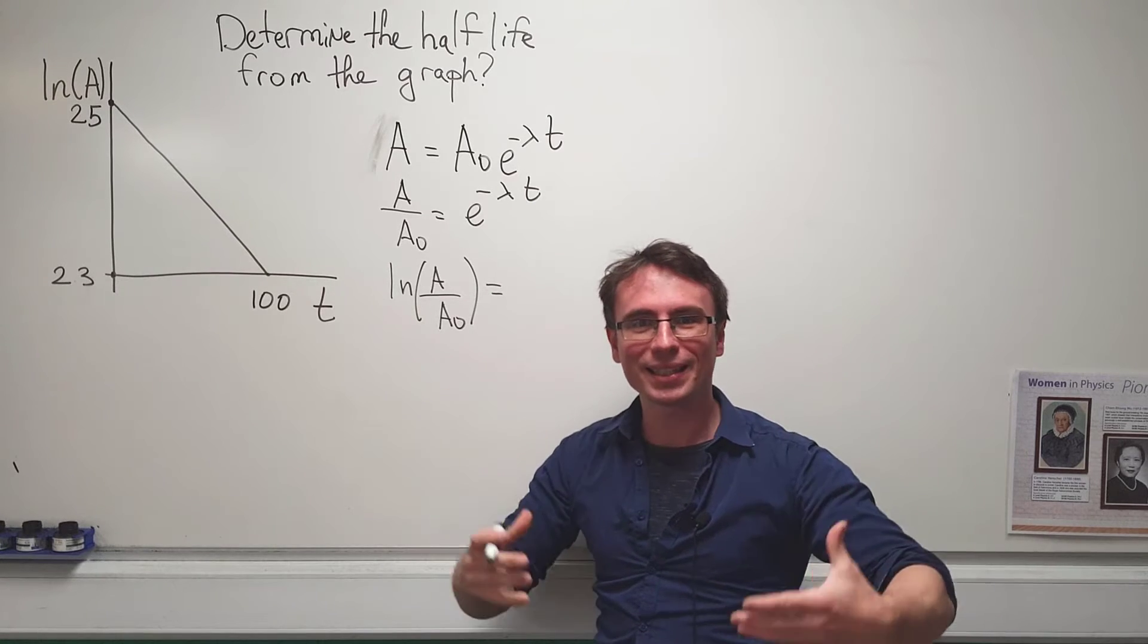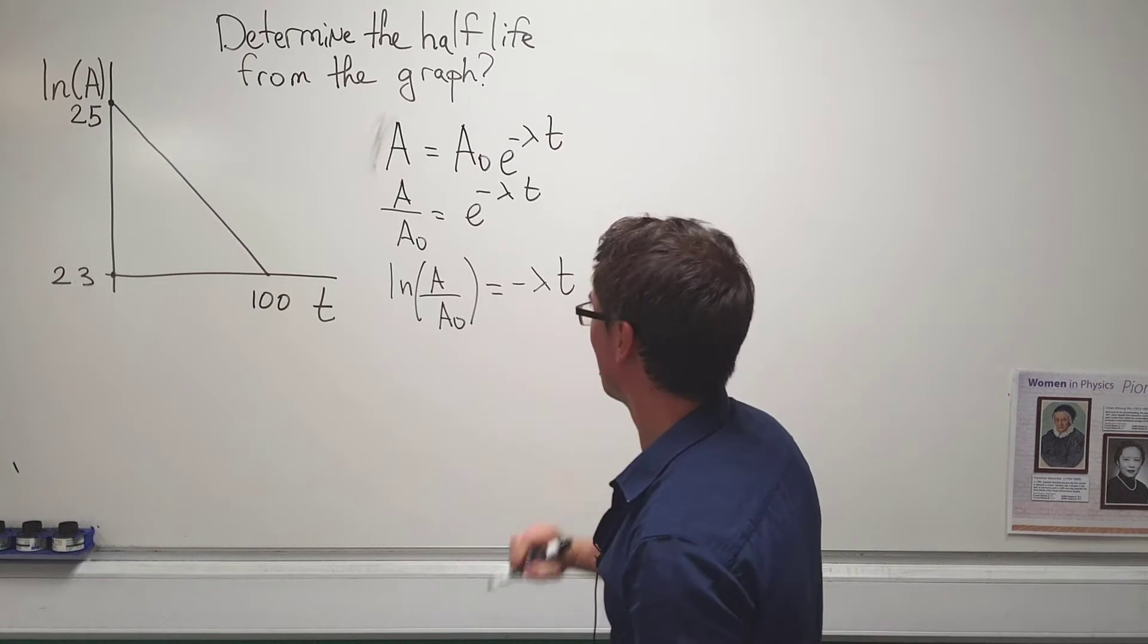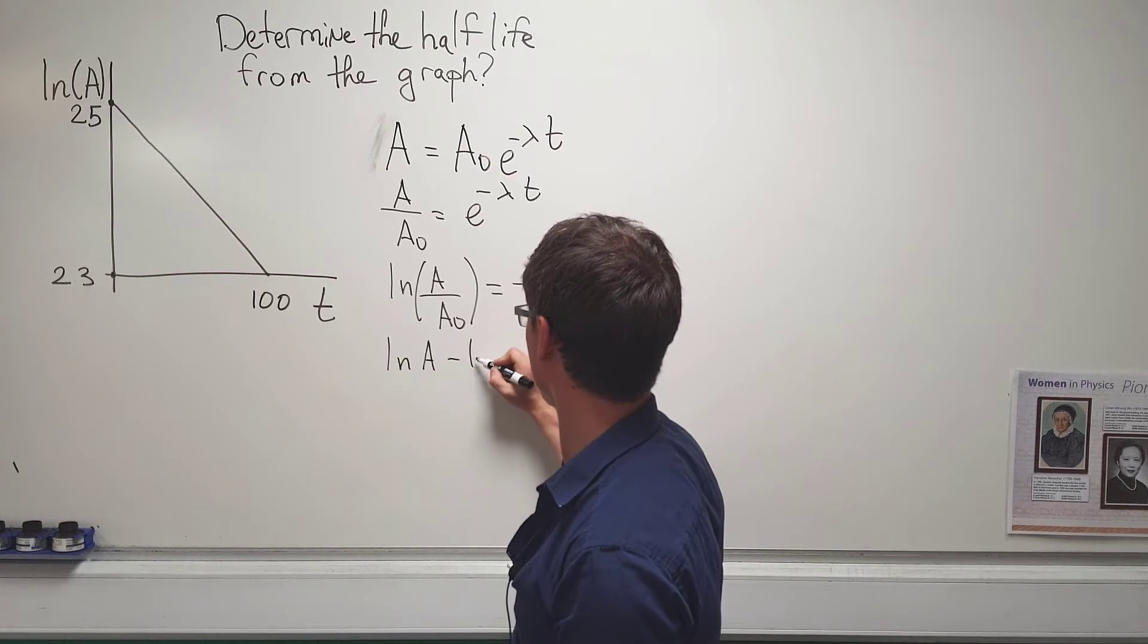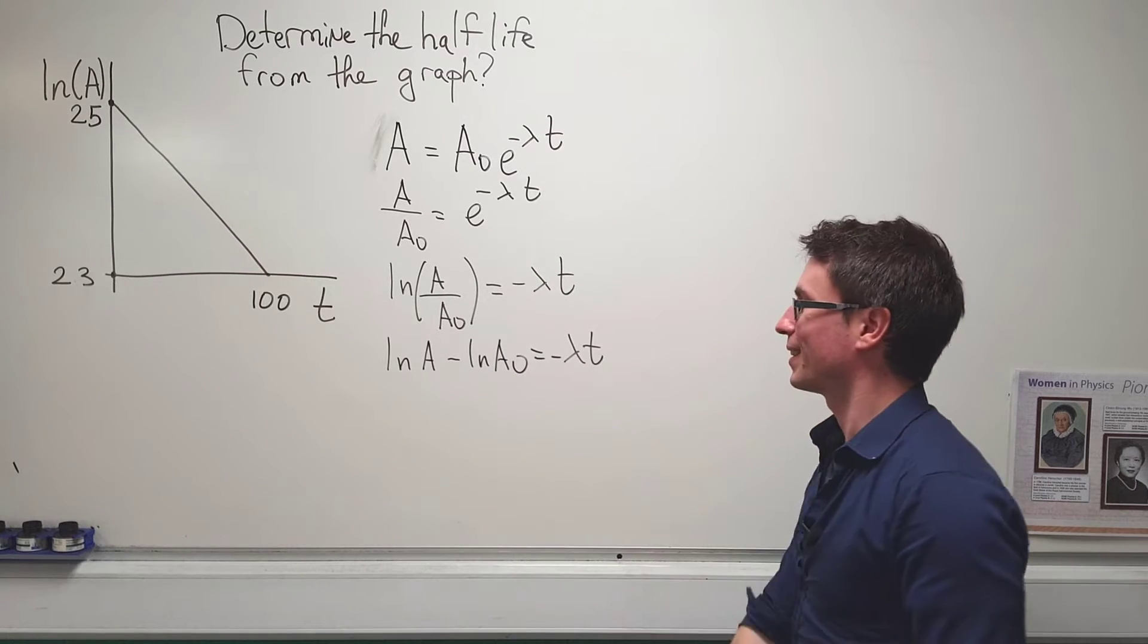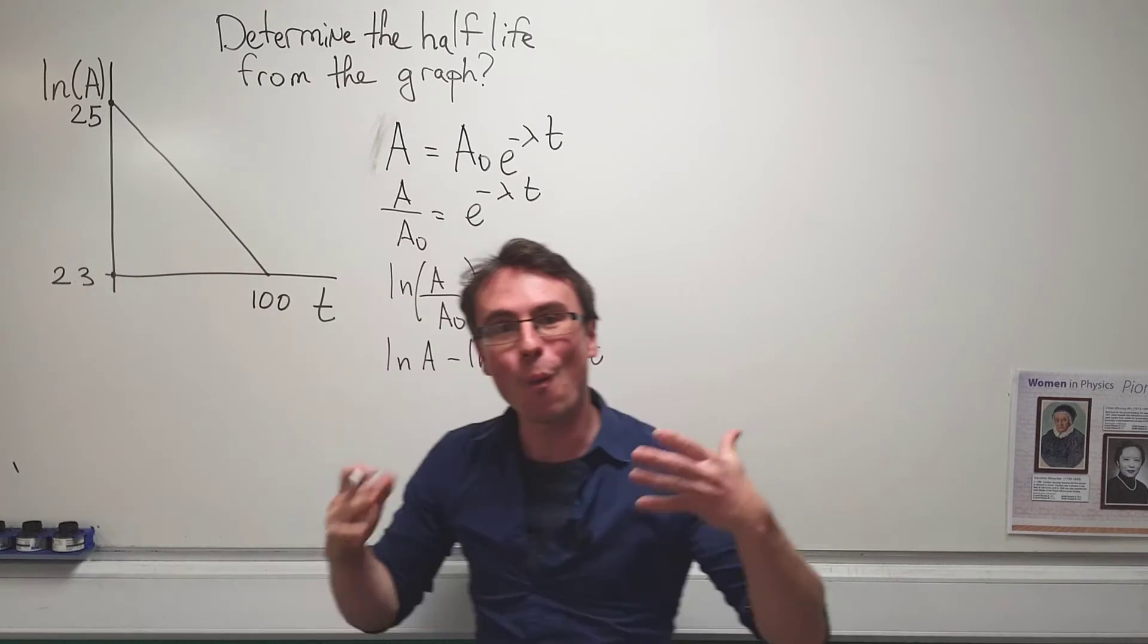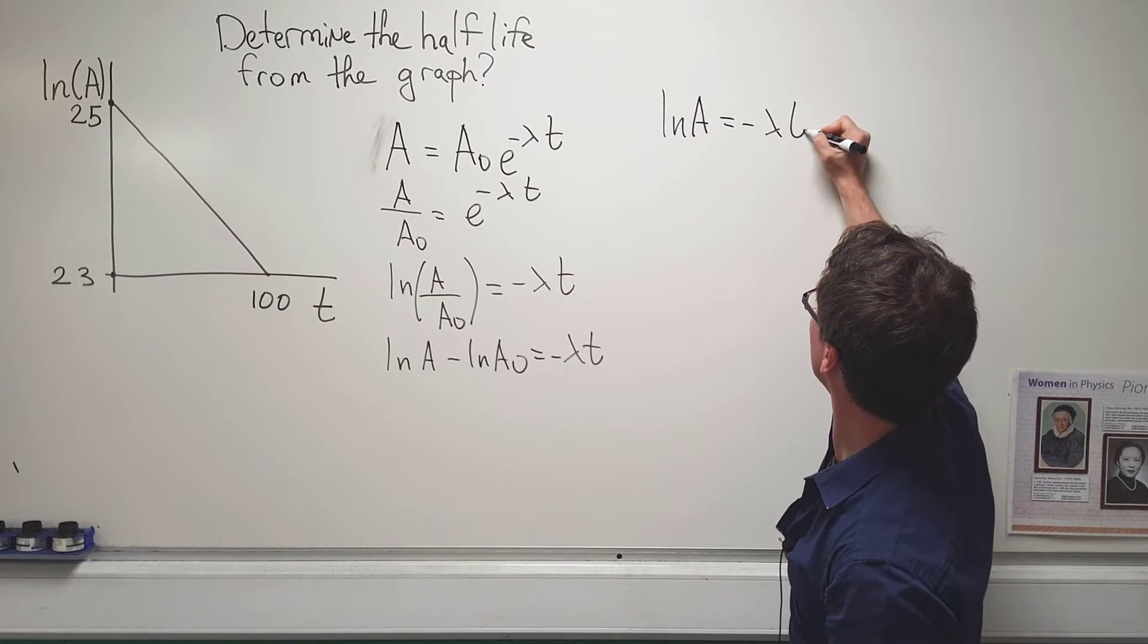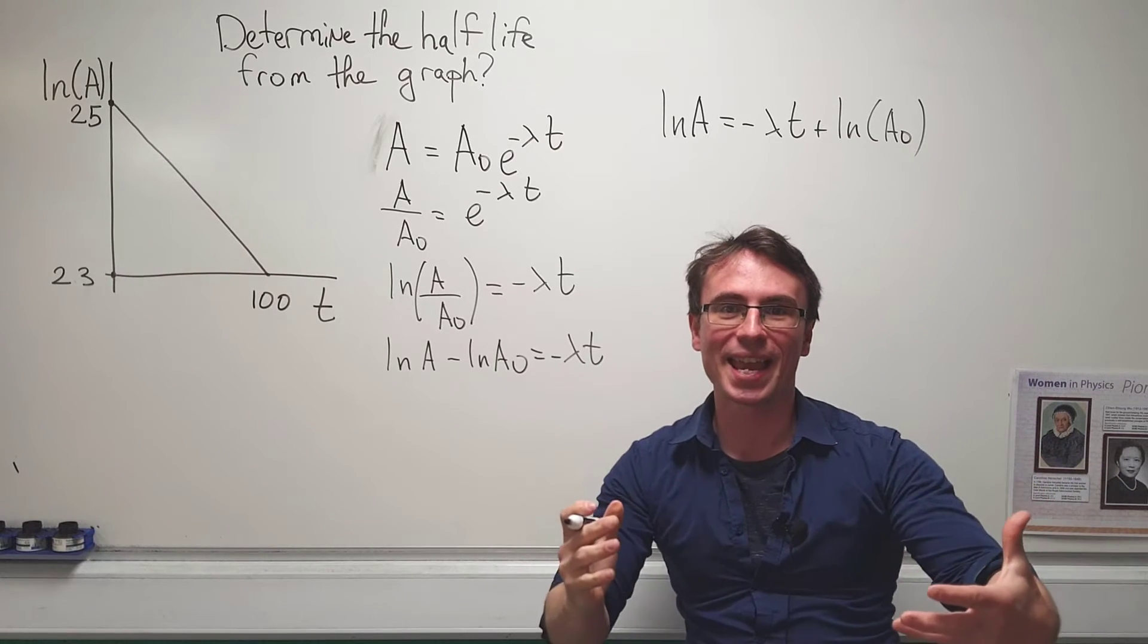Remember the ln and the exponential function are inverse functions, so what I'm going to get is just minus lambda t. Now using the properties of logarithms, I can just say that ln of A take away ln of A₀ is equal to minus lambda t. My final step would be to rearrange for whatever is on the y-axis. So what we have is ln of A is equal to minus lambda t plus ln of the initial activity A₀.